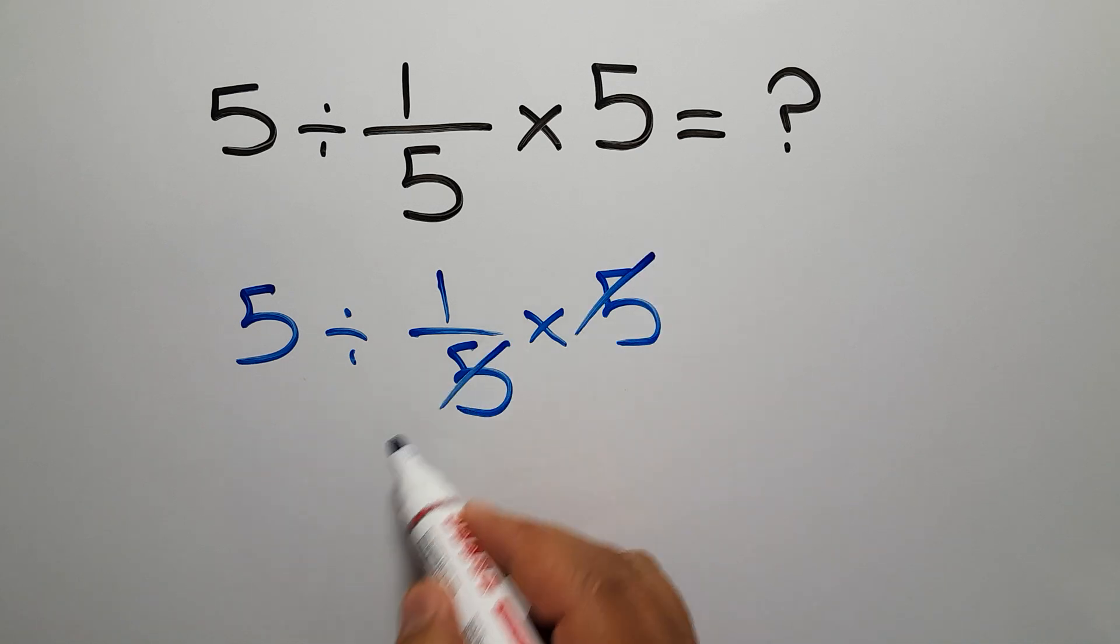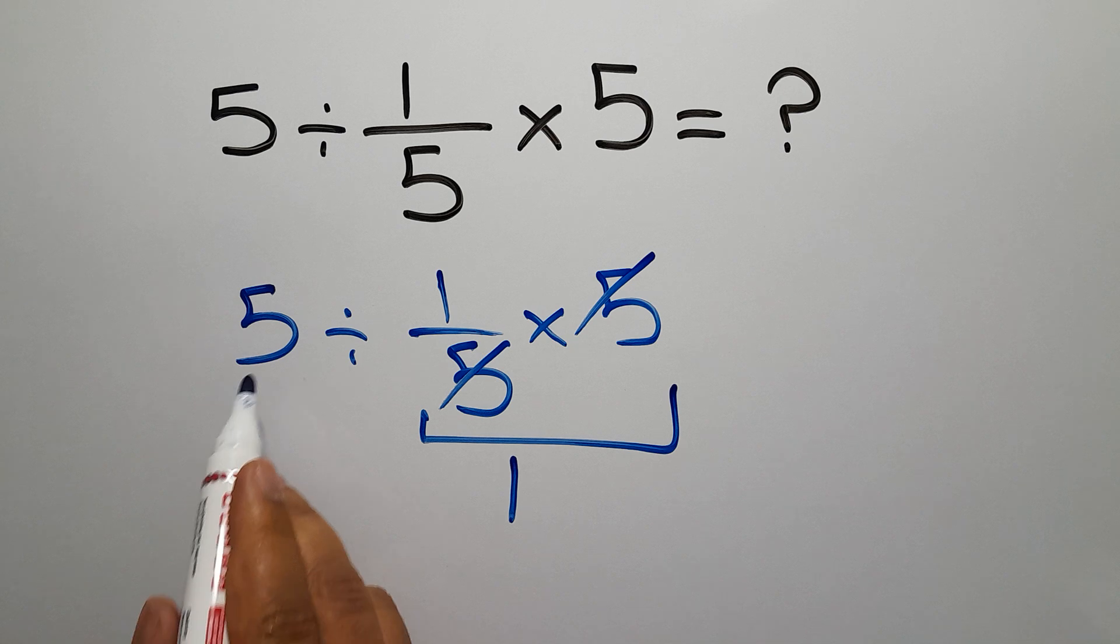We can easily cancel this 5 and this 5, so we have 1, and 5 divided by 1 gives us 5.